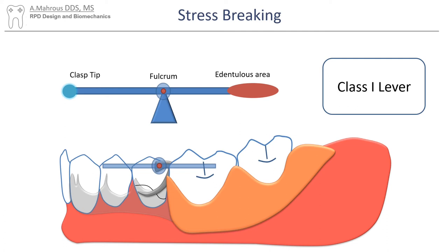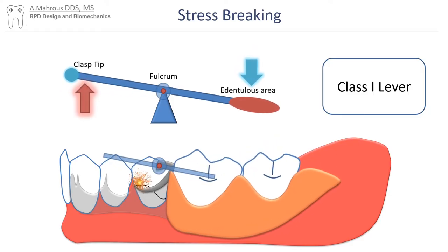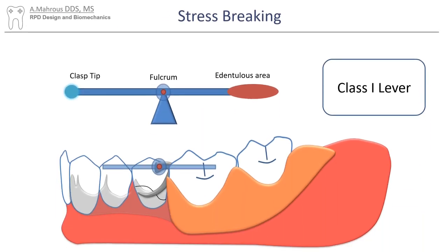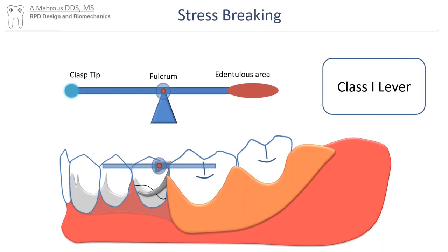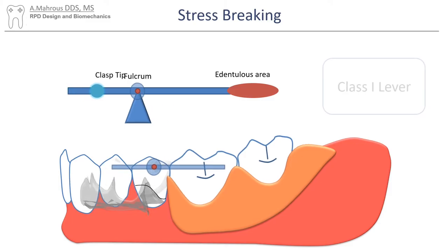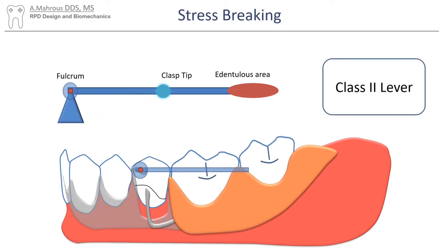The problem with Class 1 levers is that they act like a seesaw. When the edentulous span moves towards the tissue, the clasp tip moves in the opposite direction, therefore causing excessive stress on the abutment tooth. Stresses can be broken by changing the retentive clasp and fulcrum line relative positions. To break the stress, we must keep the clasp tip on the same side as the edentulous space. In other words, the clasp tip should be closer to the edentulous space than the fulcrum line.